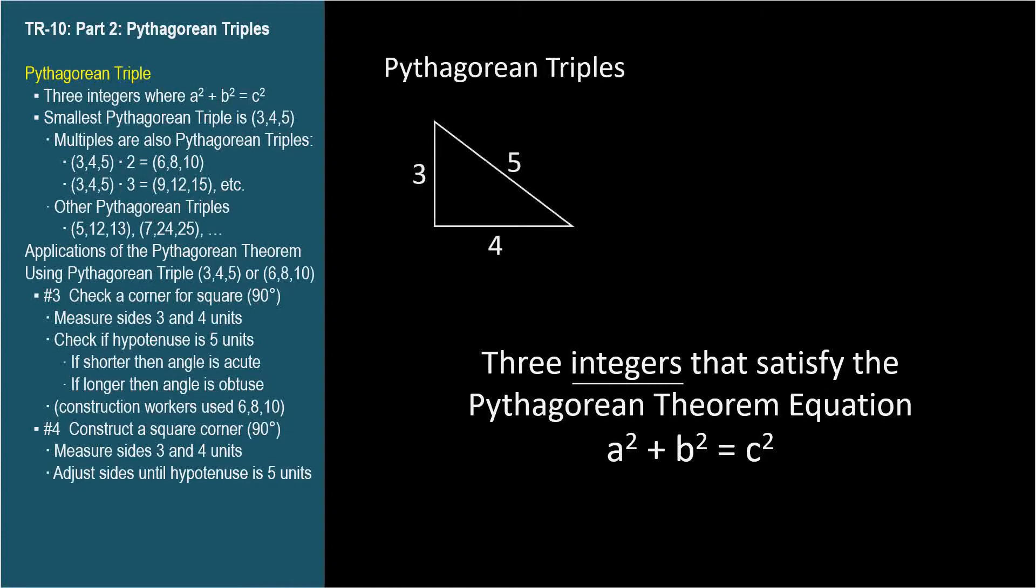The simplest Pythagorean triple having the lowest integers is 3, 4, and 5. Because 3 squared plus 4 squared equals 5 squared, or 9 plus 16 equals 25.